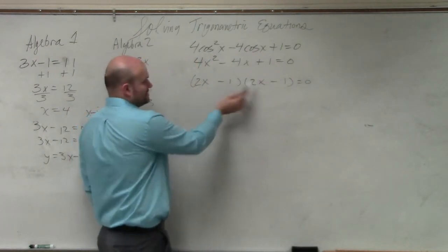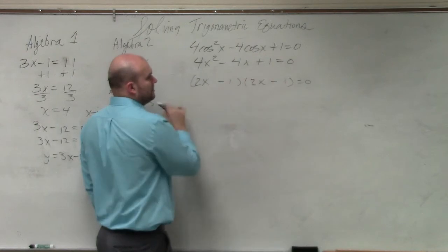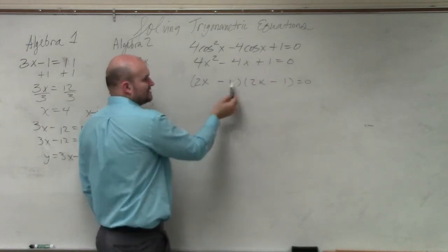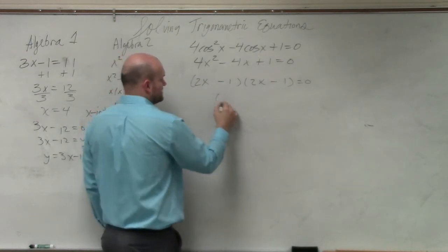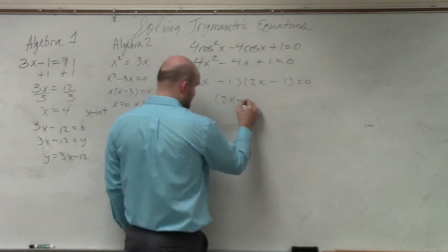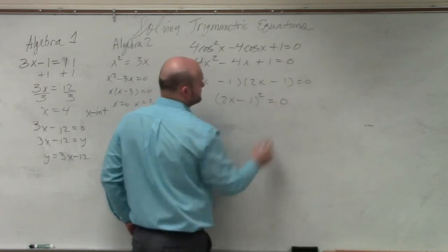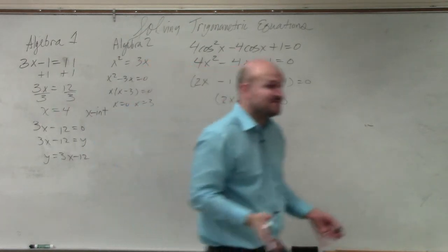And let's make sure. Does that work? 2x times 2x is 4x squared. Negative 2x, negative 2x, that's negative 4x. Negative times negative is a positive. 2x minus 1 squared equals 0. So that is my factored form.